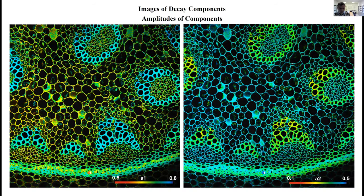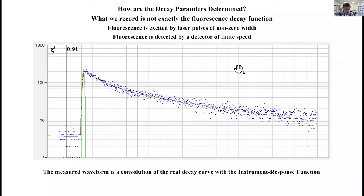The question is now how can we determine the decay parameters. If I say just determine the fluorescence lifetime of a decay profile it sounds easy, but in fact what we are recording is not exactly the fluorescence decay function. The fluorescence is excited by laser pulses of non-zero widths and detected by a detector of finite speed.